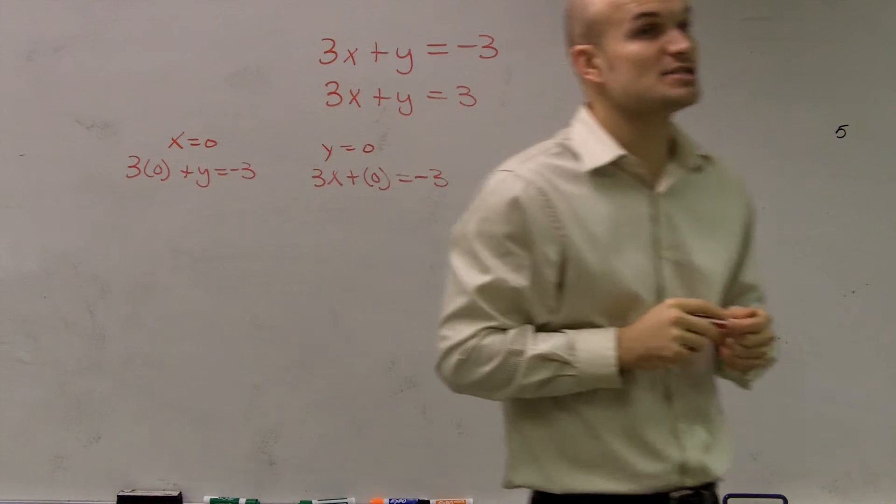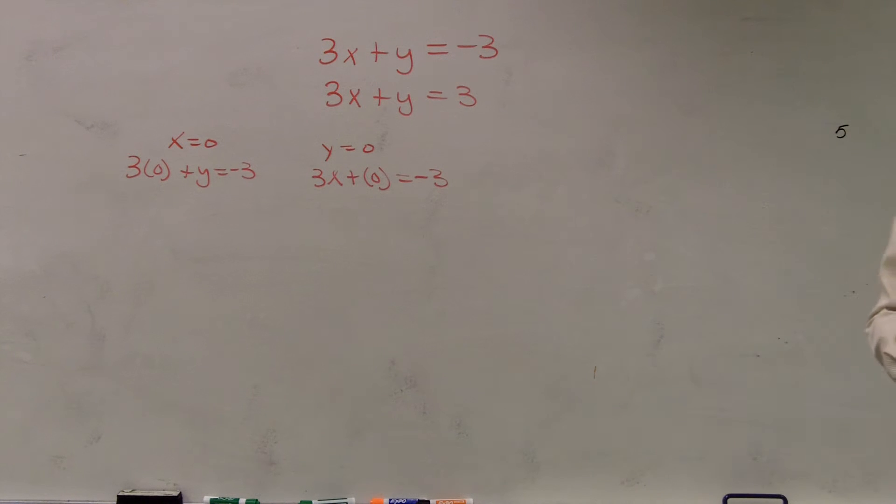So all I do for the x and y intercept method is I plug 0 in for x and solve for y. And then I plug 0 in for y and solve for x. That's it.